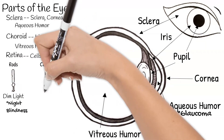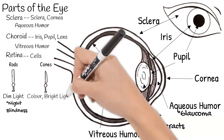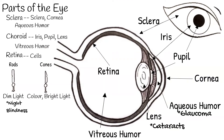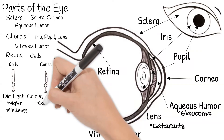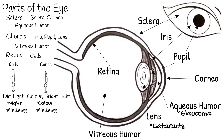Cones are specialized for color and high-intensity light. Because cones work best with bright light, it is difficult for you to distinguish between colors in the moonlight or dim light. Color blindness happens because of defective cones, which cause the person to not see some combinations of light wavelengths.